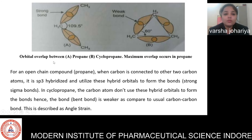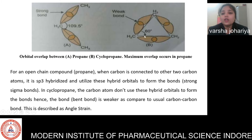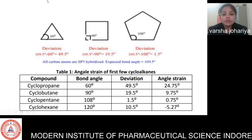Here is the diagram of cyclopropane. Cyclopropane has a triangular structure and the internal bond angle is 60 degrees. The normal tetrahedral bond angle is 109.5 degrees. So for cyclopropane, cyclobutane, and cyclopentane, we can calculate the deviation from the normal tetrahedral angle. For cyclopropane, the bond angle is 60 degrees.